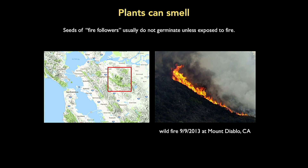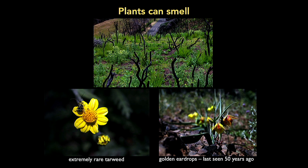Plants can smell. There are plants that germinate only after they smell or detect smoke. A good example: when I was a postdoc in San Diego, there was a wildfire in Mount Diablo, close to the Bay Area. These plants basically germinated after 50 years — the seeds are made and get buried in the ground, and they will never germinate until they can detect smoke. You need a wildfire; carbon has to be burned before the seeds start germinating. We can mimic this in the lab — you just take the seeds, burn a piece of paper, expose the smoke to the seeds, and they start germinating. The example is golden eardrops. They were not seen for 50 years and will not germinate no matter what you do otherwise.